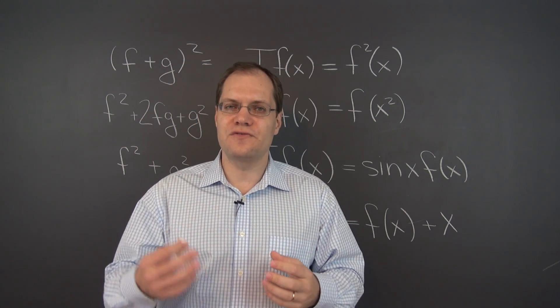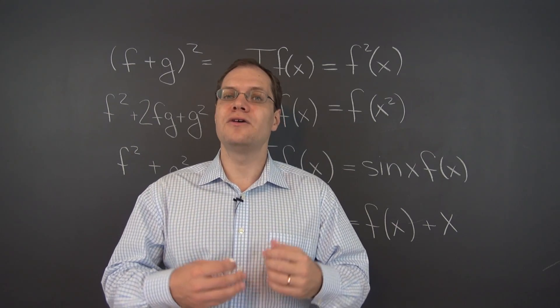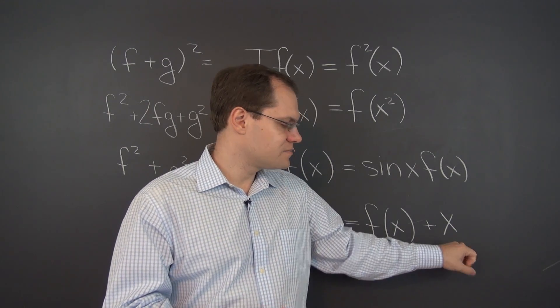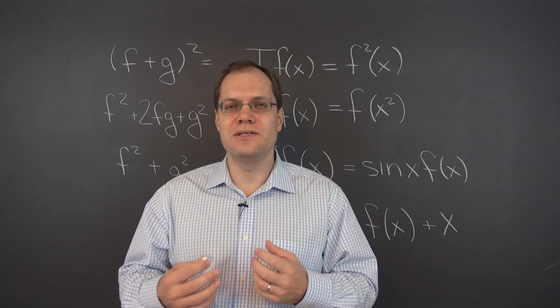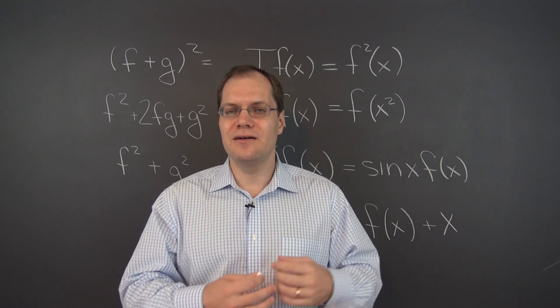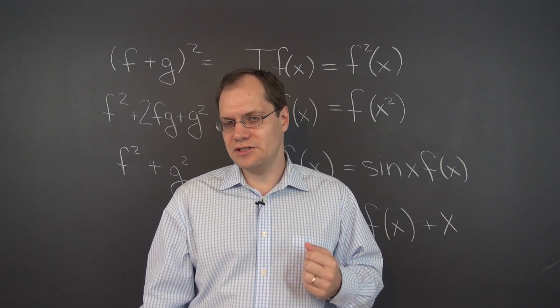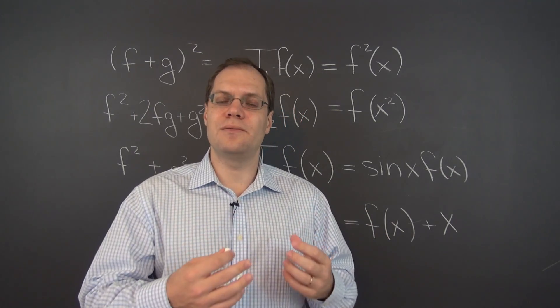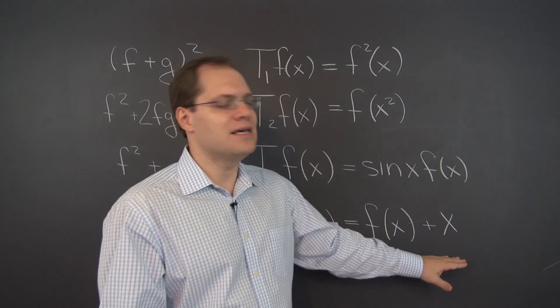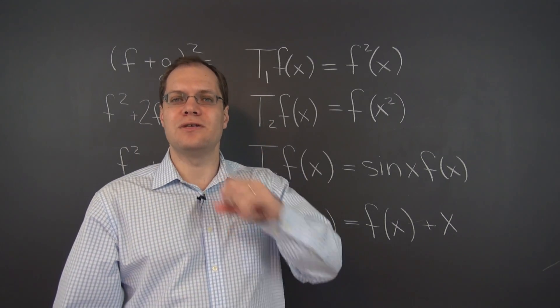Because if you add the two functions first and then transform them, you'll have the sum plus x. And if you transform individual functions and add them together, you'll have the sum plus x plus x, x from each of the transformations. So you'll have the sum plus 2x. So this innocent-looking function is actually not linear.